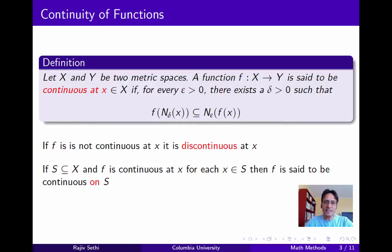For any set S in the domain, if f is continuous at every point in the set, then f is said to be continuous on the set. And if it's continuous on the entire domain, we say that it's a continuous function.